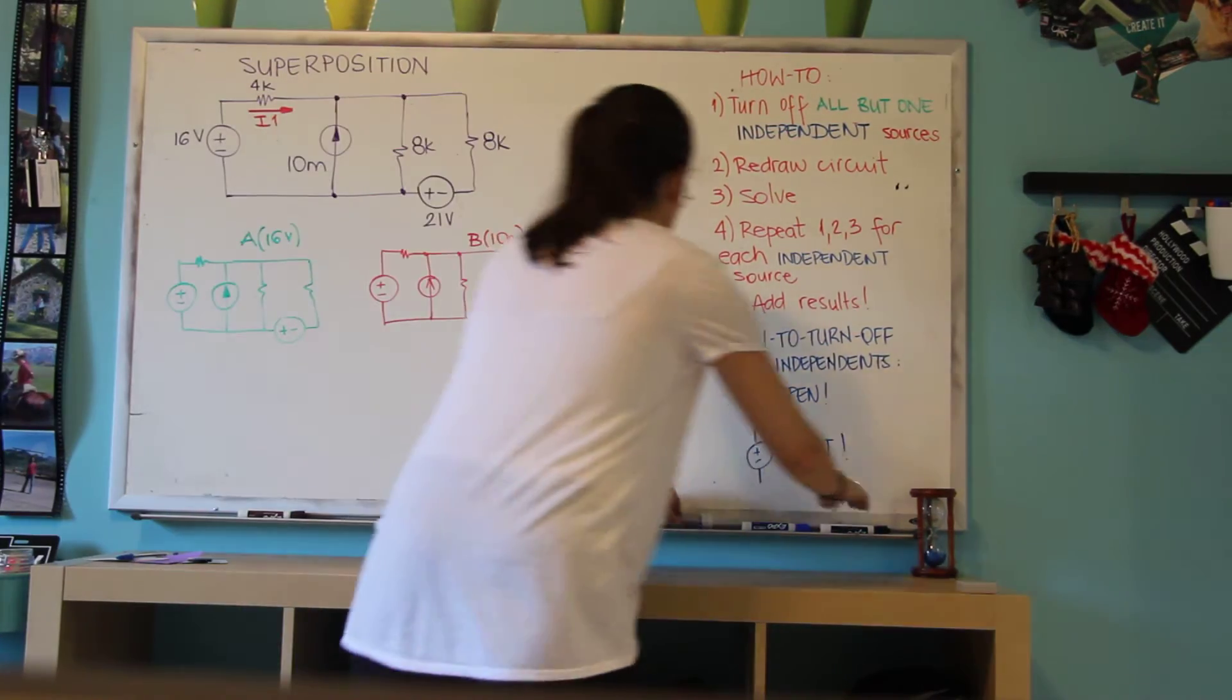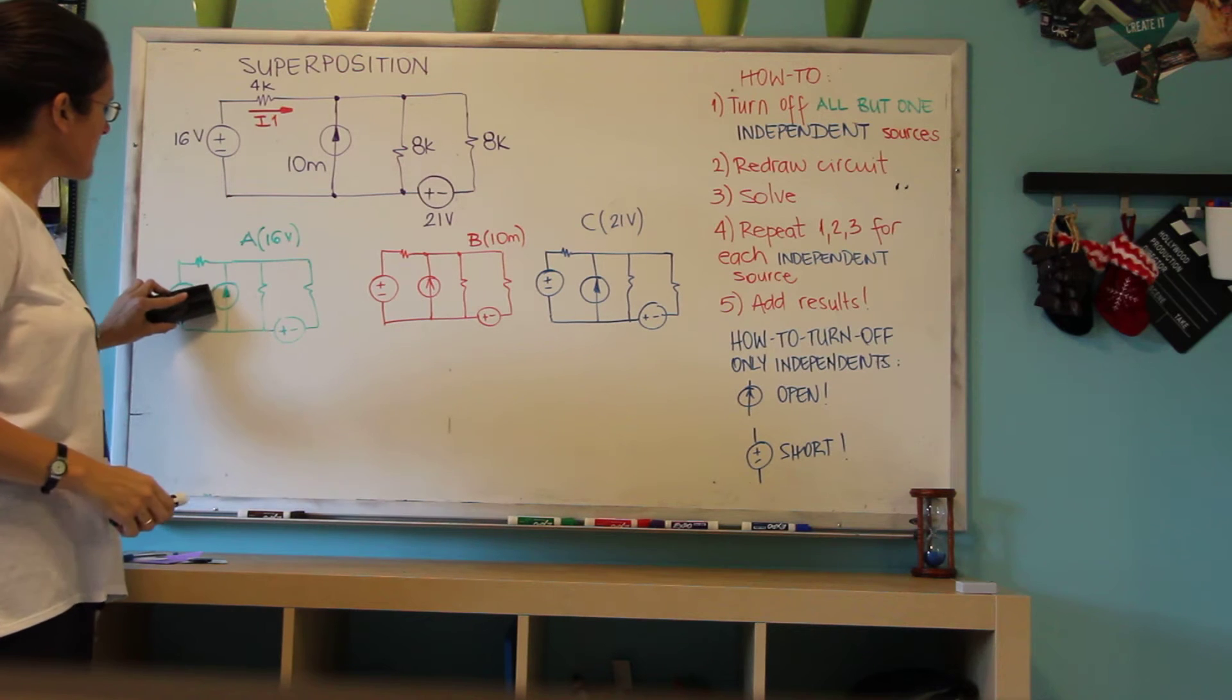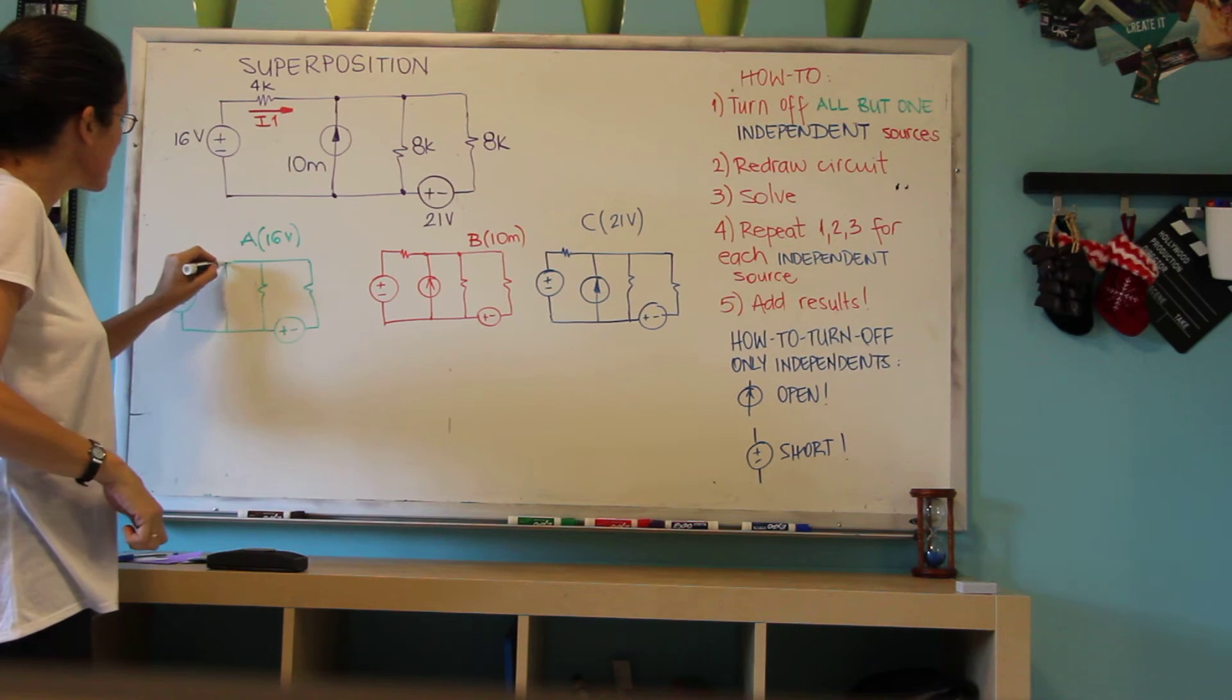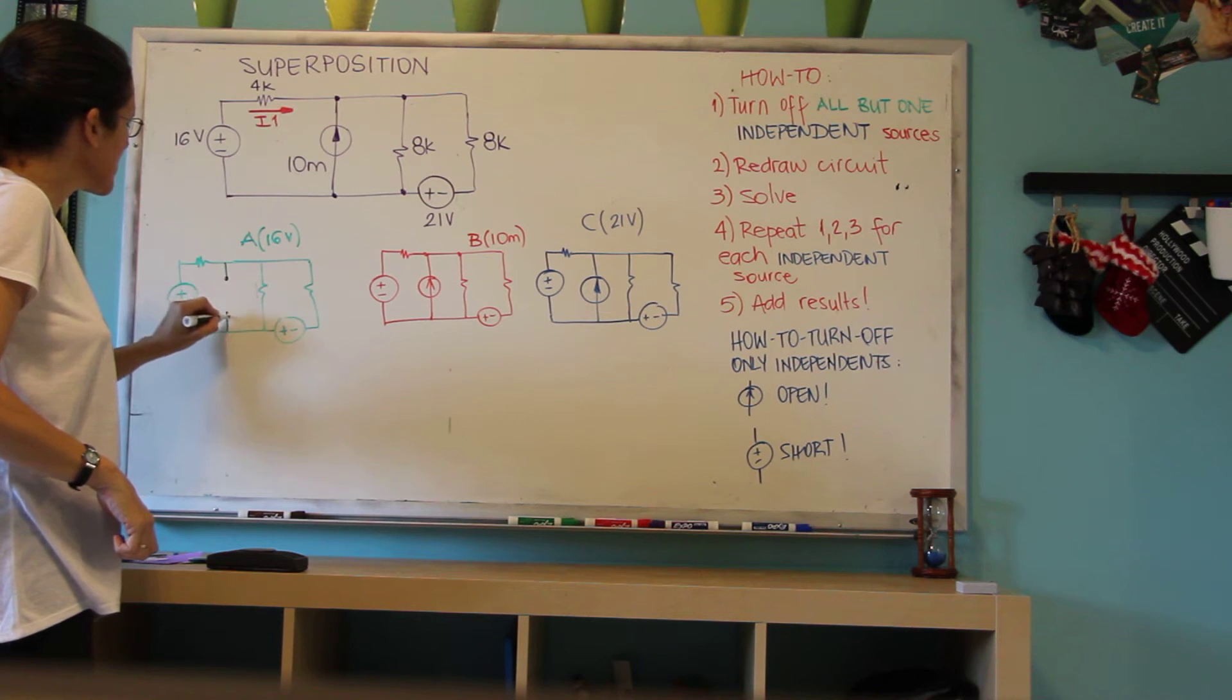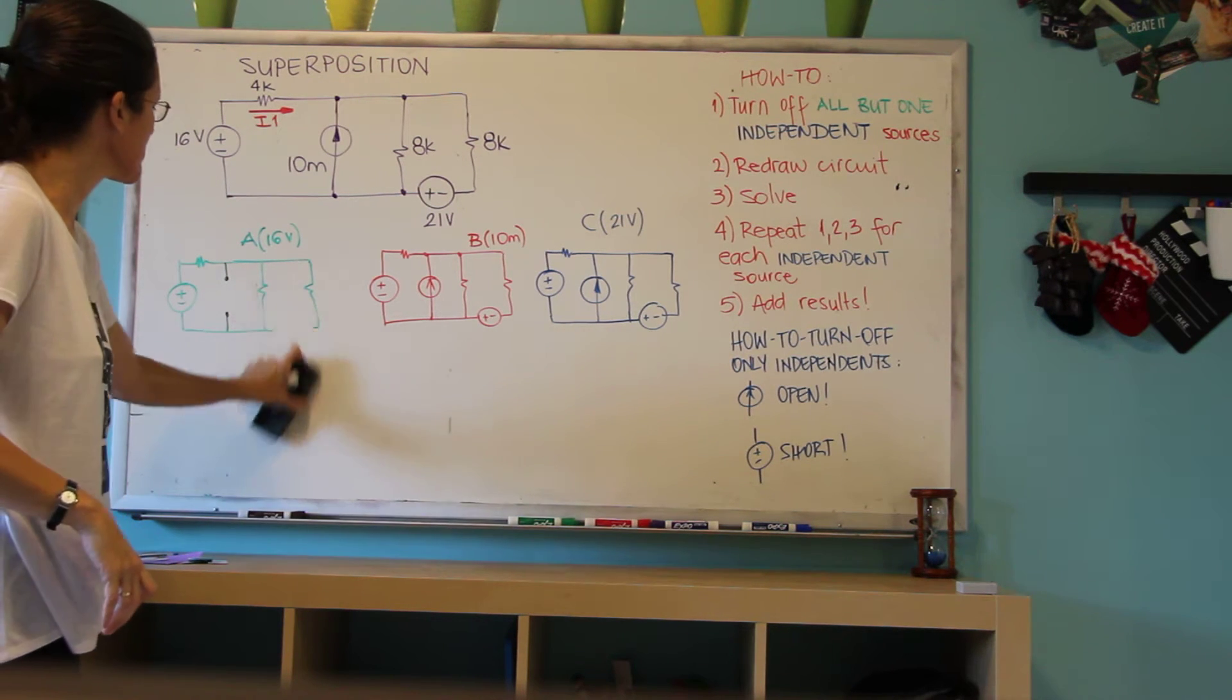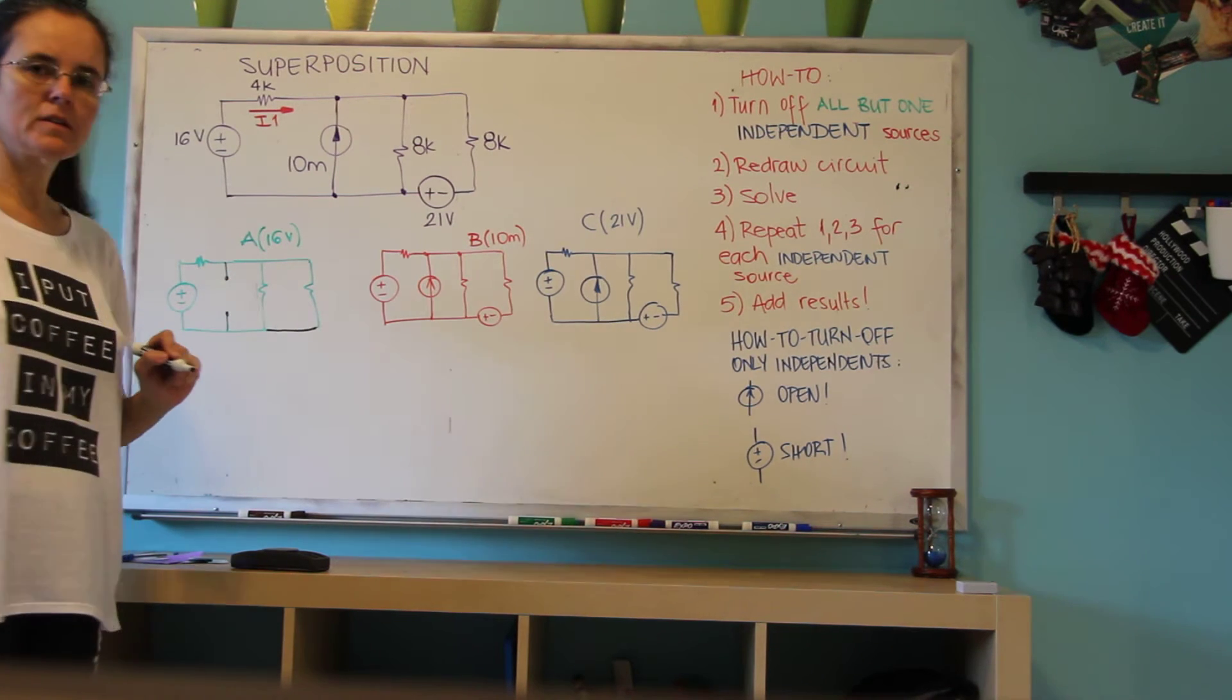And this is the only new thing in superposition. If it's a current supply, we're going to open it. So I want to turn this current supply off by just opening it like this. And the 21 volt voltage supply, this one, I'm turning off by shorting it.